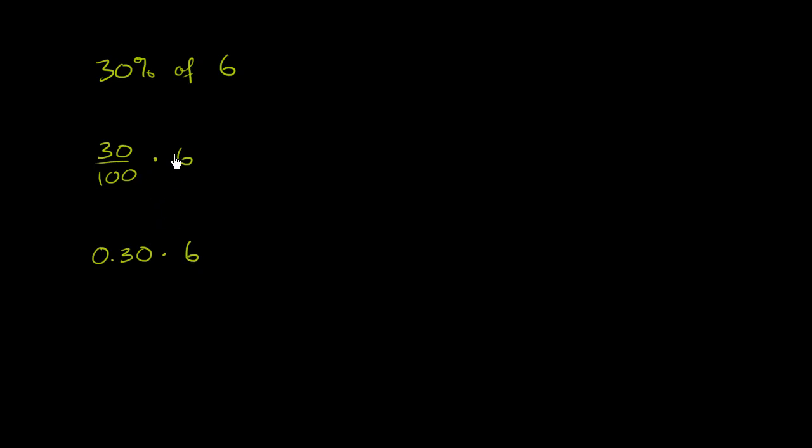If you do this multiplication right over here, 30 over 100, and you could view this times 6 over 1, this is equal to 180 over 100. We can simplify by dividing the numerator and denominator by 10, and then dividing the numerator and denominator by 2. We will get 9 fifths, which is the same thing as 1 and 4 fifths.